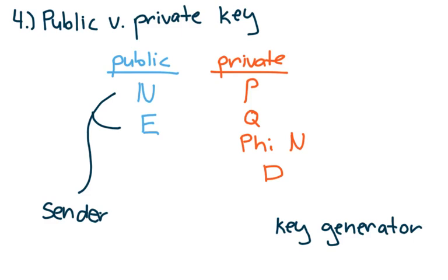These two values of N and E are the ones that will be used by the sender to encrypt his or her message. I'll go more into the mechanics of exactly how they'll do this in a later video, but for now, it suffices to know that the sender encrypts a message using the values of N and E.